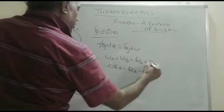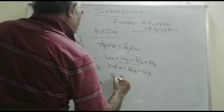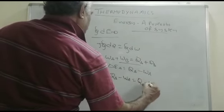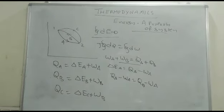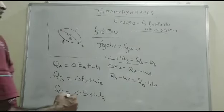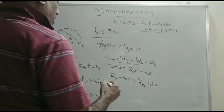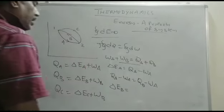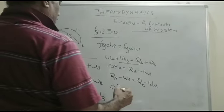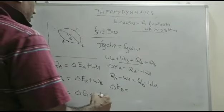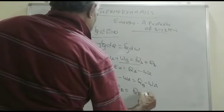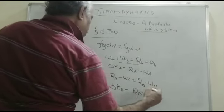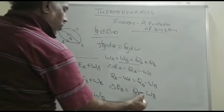From this equation, Q_A minus W_A is equal to Q_B minus W_B. Now, δE_B is similarly equal to Q_B minus W_B. So from these two equations, Q_B minus W_B is equal to Q_A minus W_A.